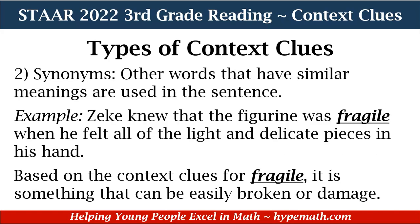The next context clue we're going to discuss is synonyms — other words that have similar meanings and are used in the sentence. In our sample sentence, we have: 'Zeke knew that the figurine was fragile when he felt all of the light and delicate pieces in his hand.' Based on the context clues for fragile, we know that it is something that can be easily broken or damaged, because it says 'when he felt all of the light and delicate pieces in his hand.'